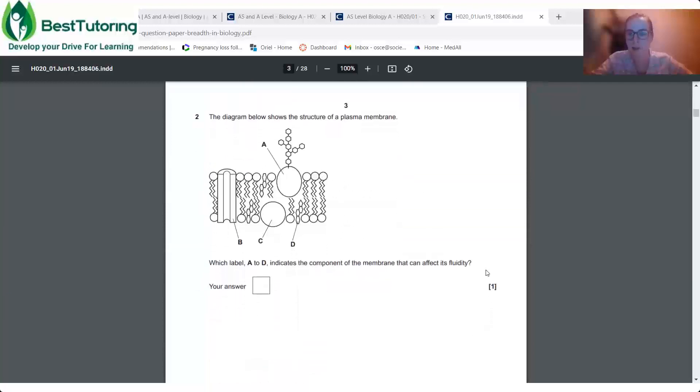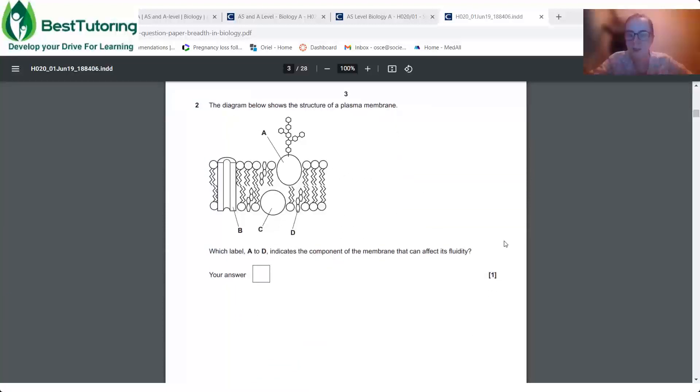Okay, so we've definitely done this one about cell membranes. So which label A to D indicates a component of the membrane that can affect its fluidity. And bonus point, if you can name it for me in the chat. Perfect. Zareen, do you want to give us your answer?